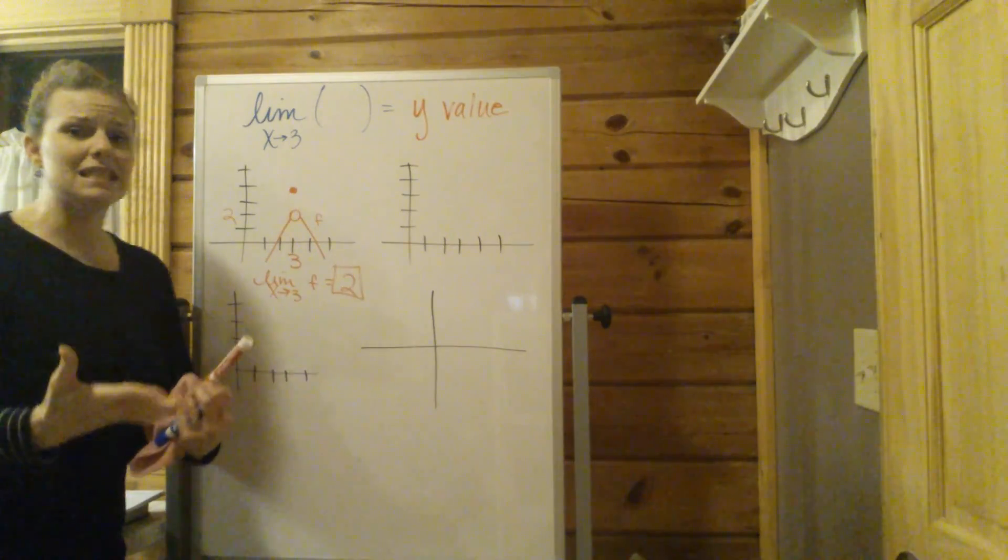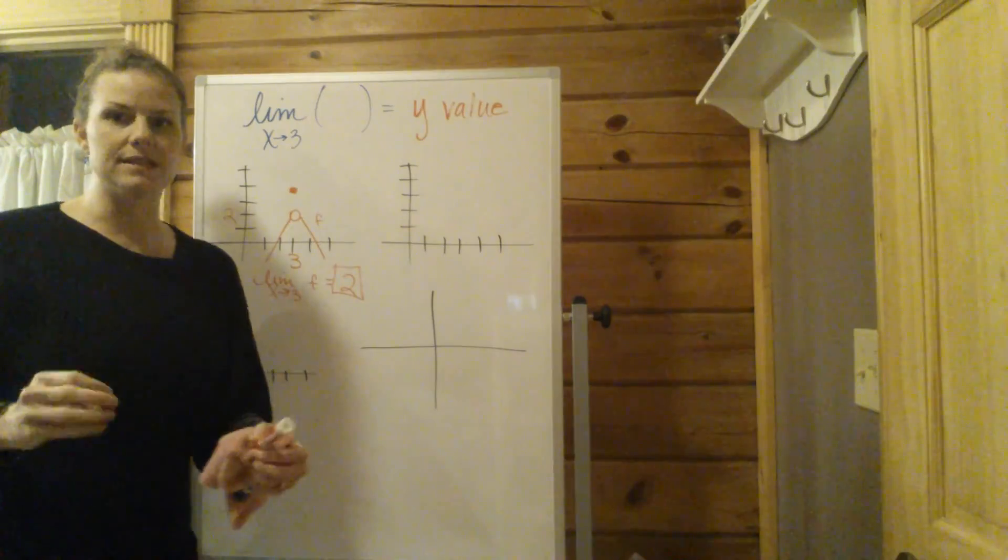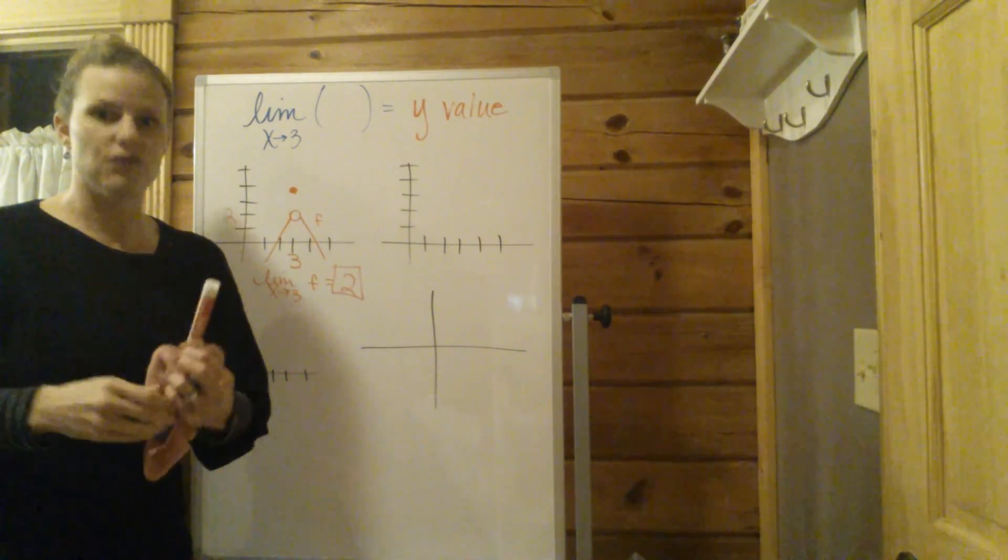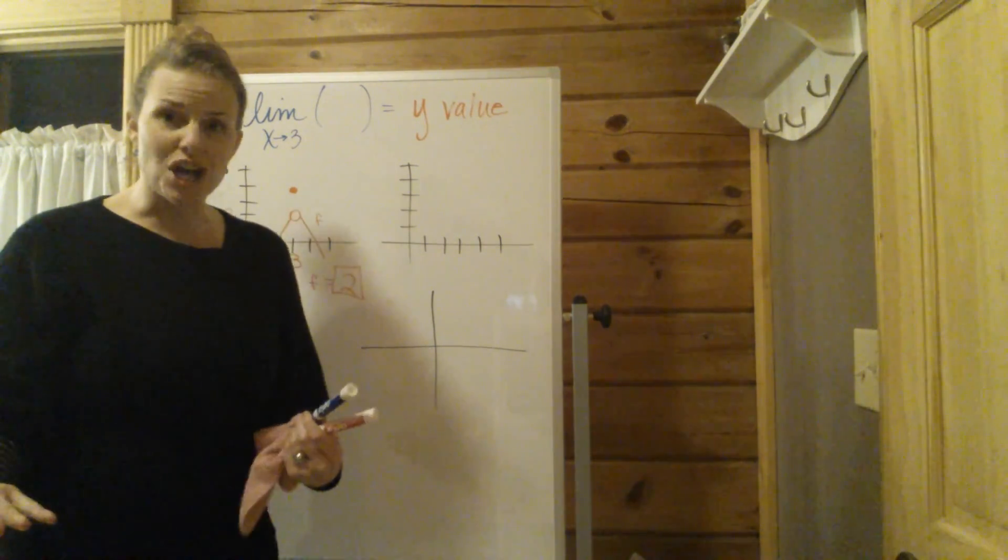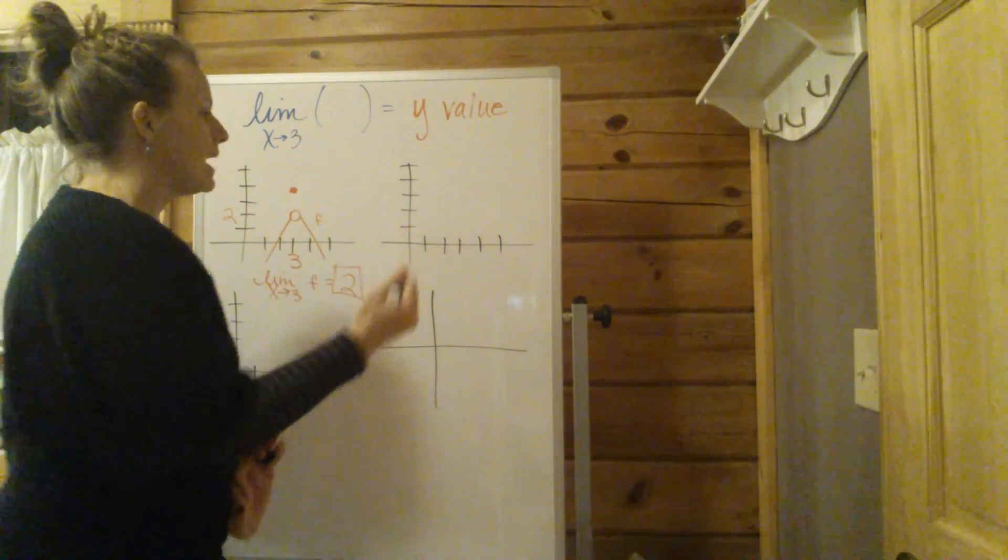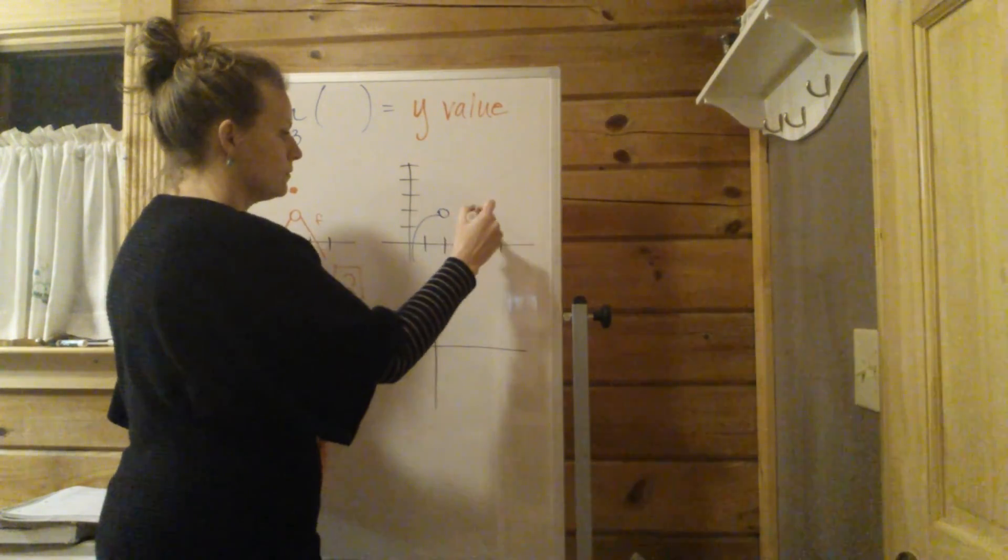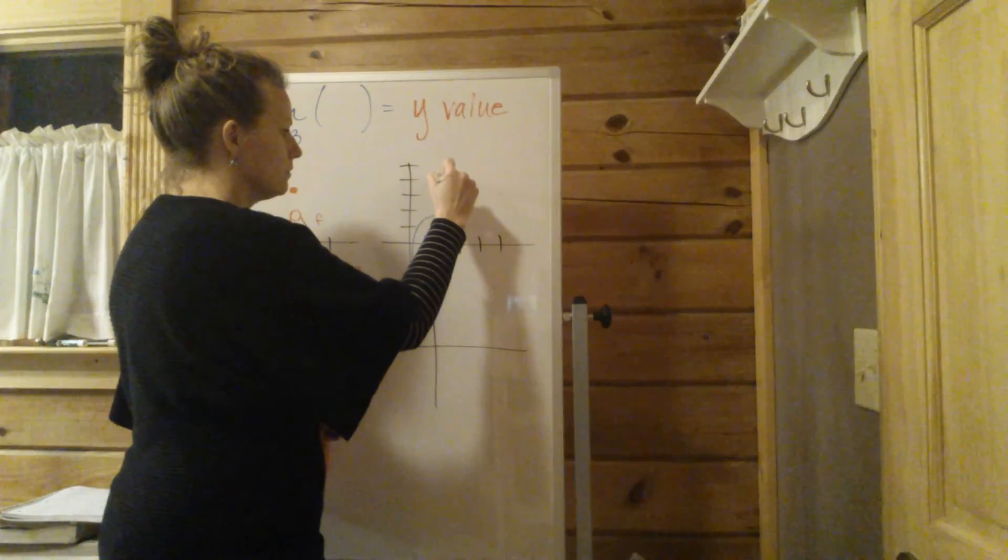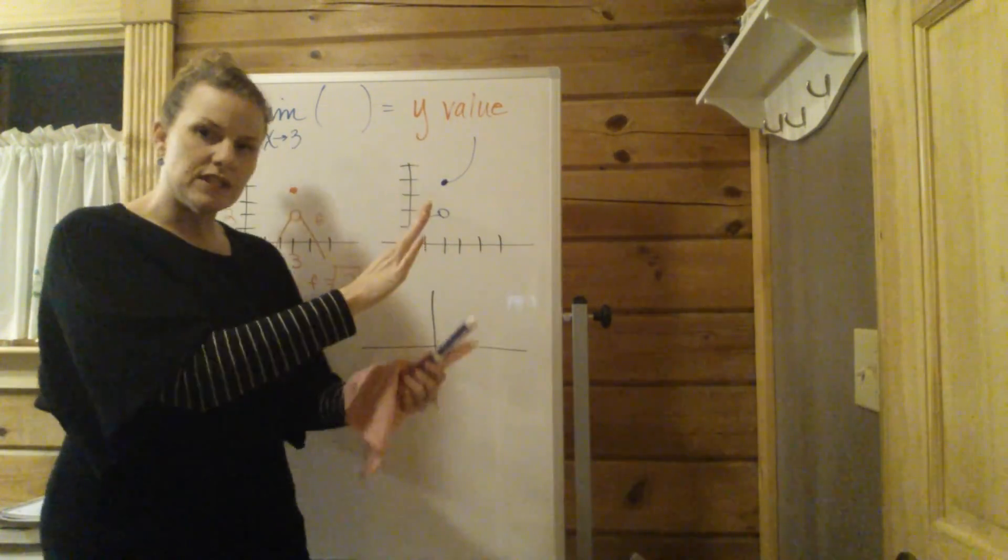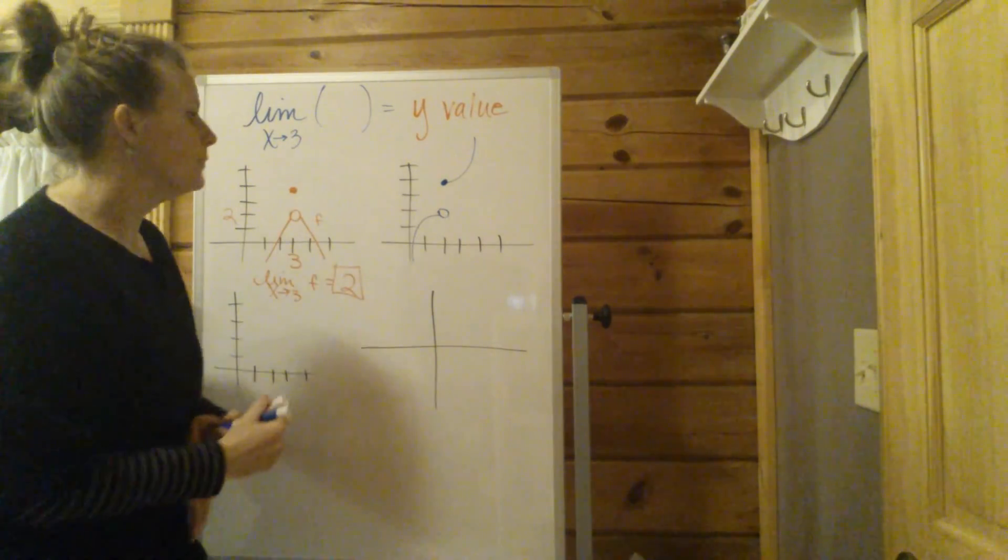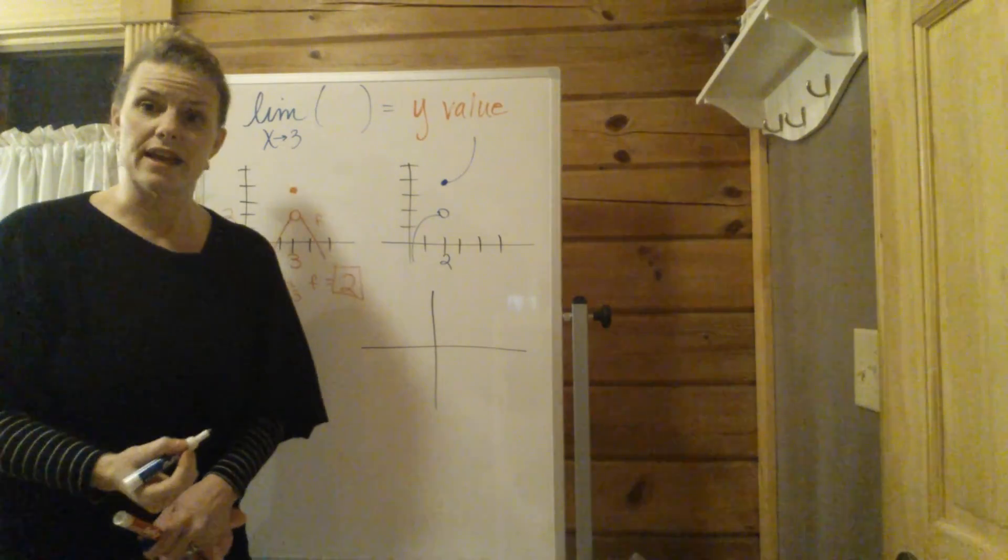The big idea with a limit not existing is that idea of from both sides. From both sides is very important with limits. So if we have a situation with another jump on a graph, that might look something like that. We have this hole and we have a jump and all that good stuff going on.